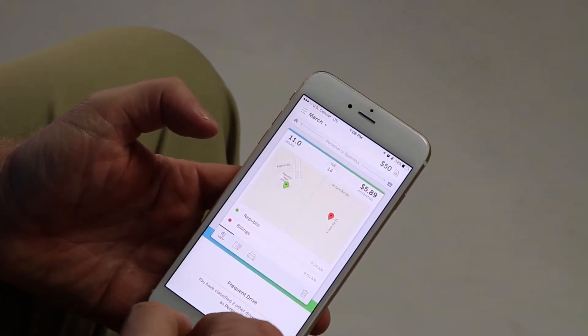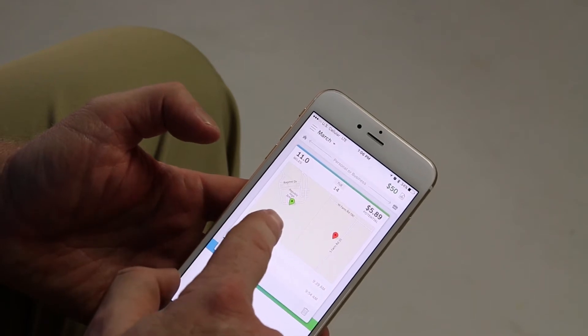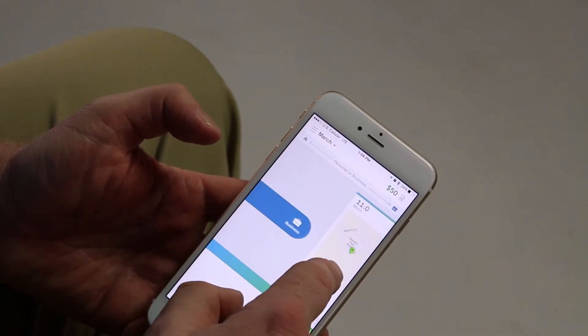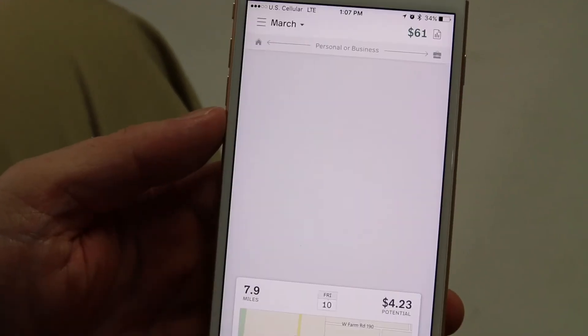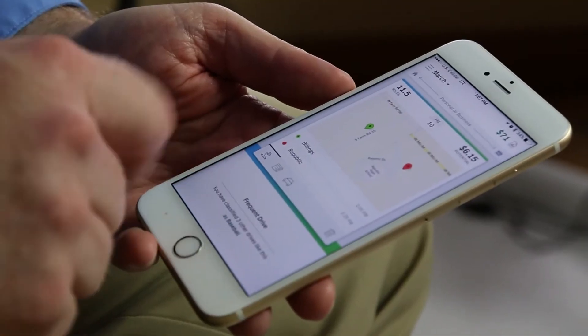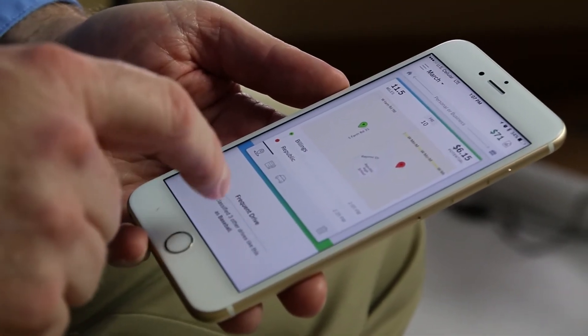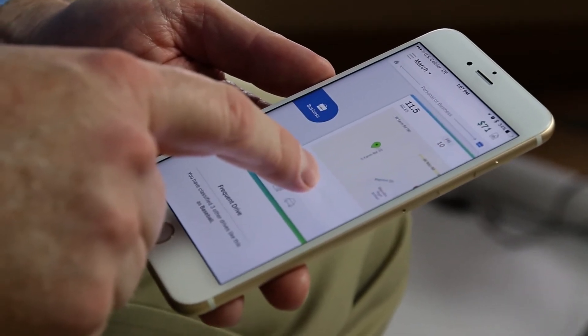MileIQ is great. It's available on Android and iOS. And what I love about it is that it's automatic. A lot of times in the past, if you wanted to track your mileage, you had to remember to at least turn it on when you got in the car. You had to make a note. You had a little notebook. You wrote it down. MileIQ runs in the background, and every time you get in the car, it starts tracking where you're going, when you stop.